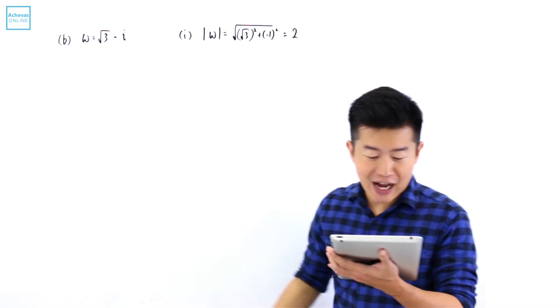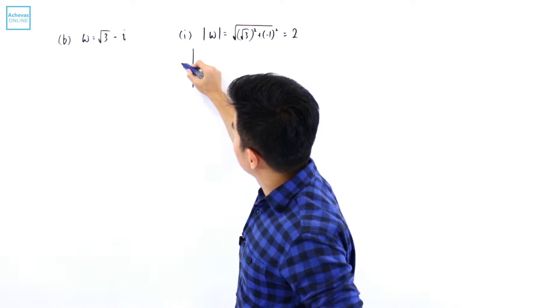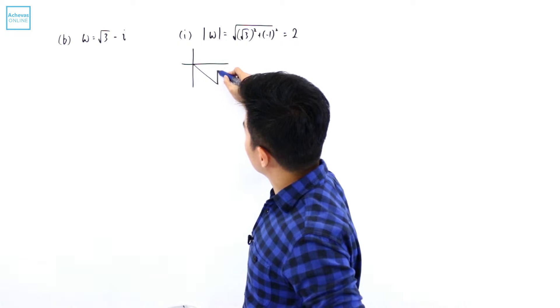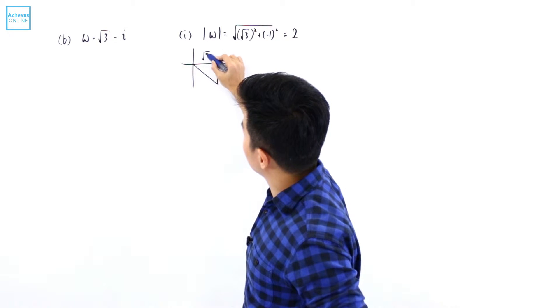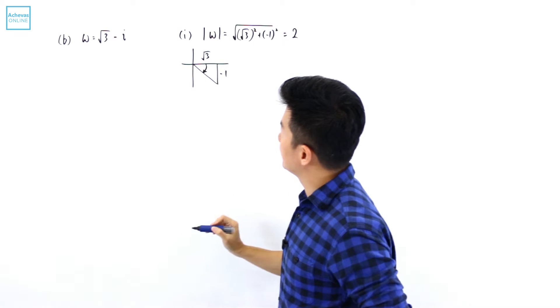And I want to find what is the argument of w. I'm going to try to sketch this on an Argand diagram. It is going to be something that is like this. Here is going to be square root of 3 and here will be minus 1. And this is the angle that we are looking for.